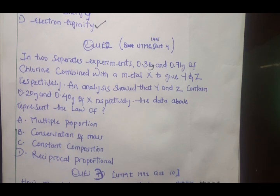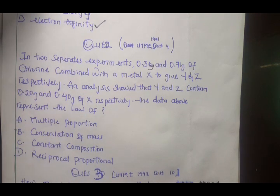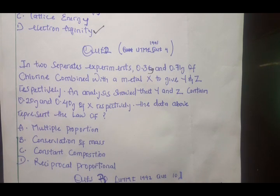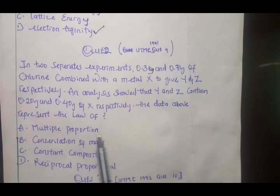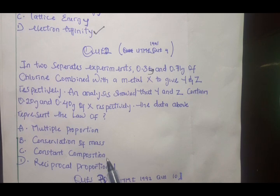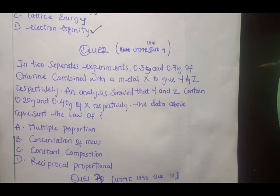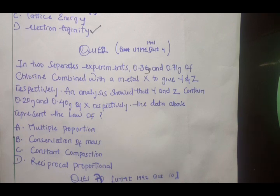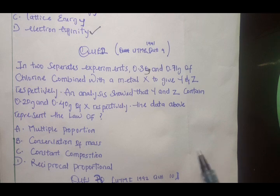Now this is also on our chemistry what we call laws of chemical combinations. We talk about conservation of mass, multiple proportion, constant composition, or definite proportion, and laws of reciprocal proportion. Now to prove this we have to do a little piece of our calculation.